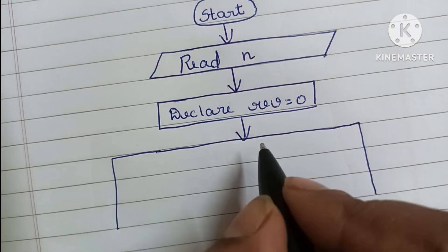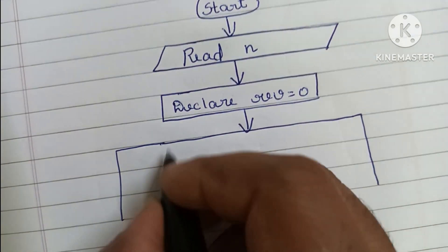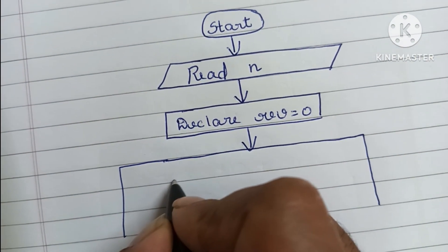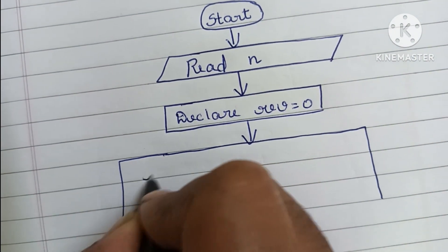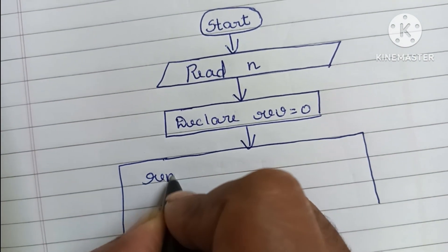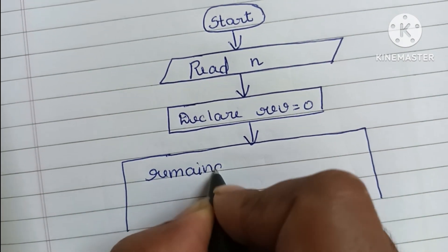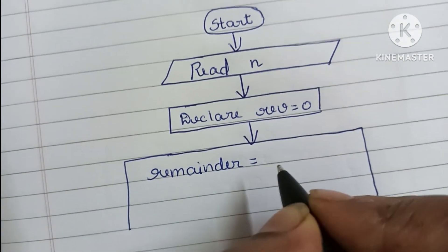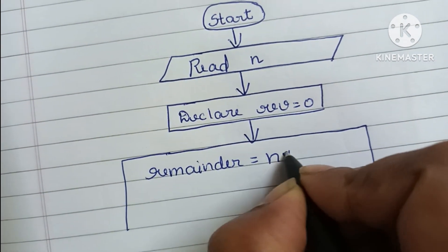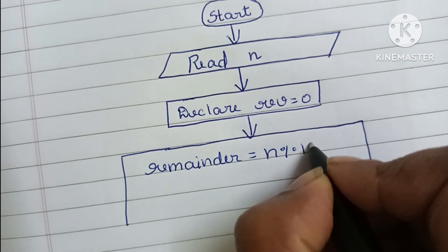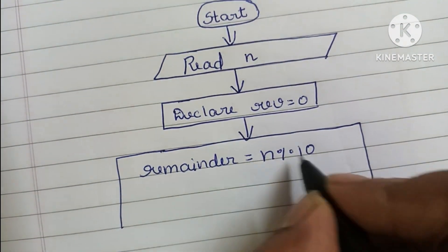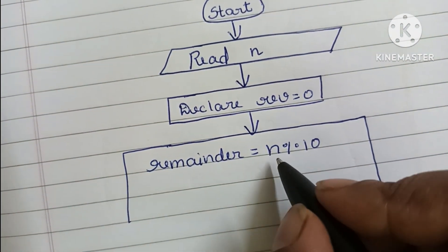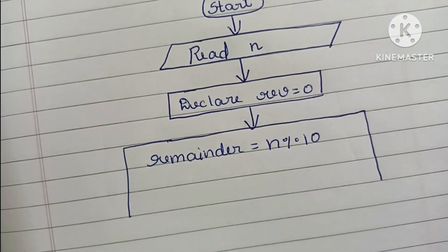Next we have to do calculations, which are done within a rectangular shape. First we have to find the remainder. Remainder is equal to N modulo 10 — that means we find the remainder of N divided by 10.